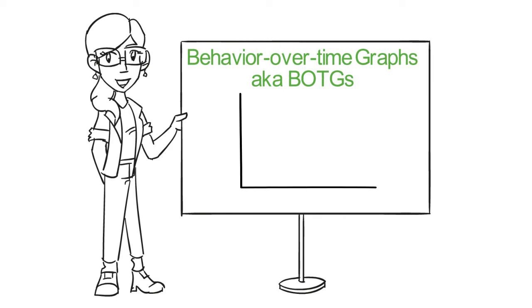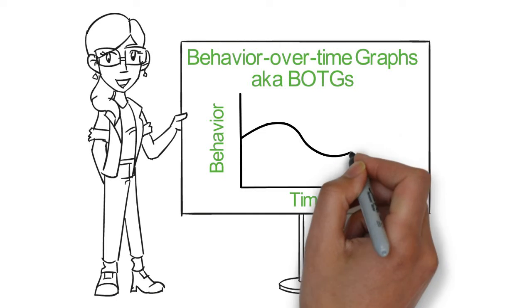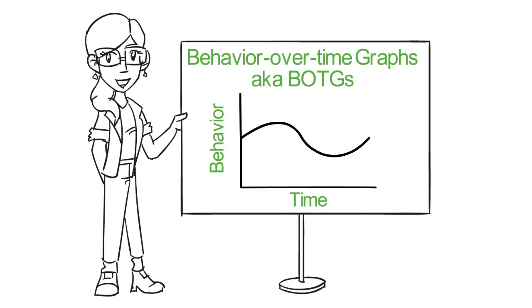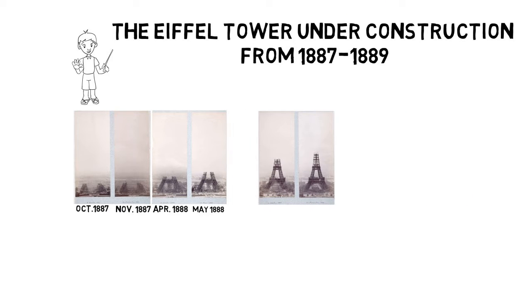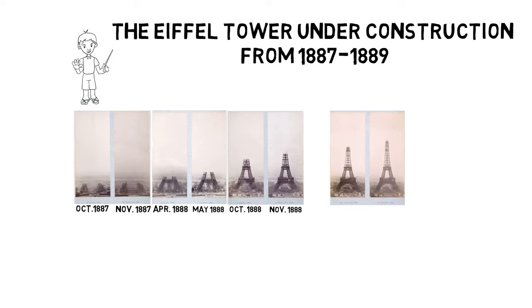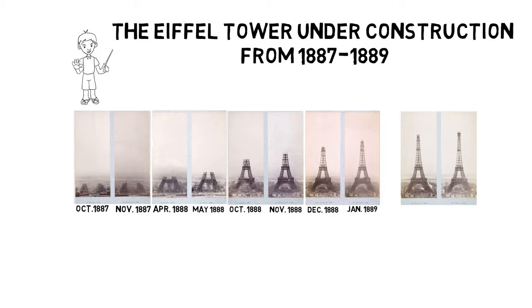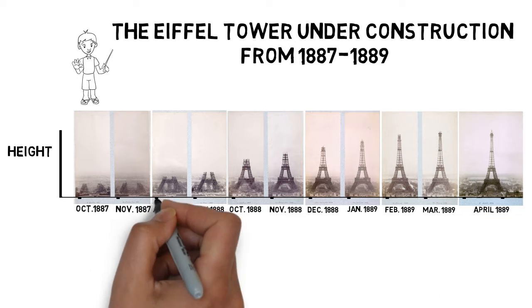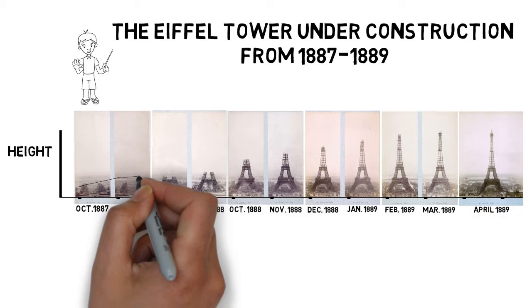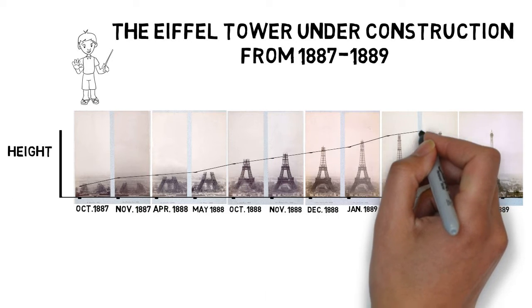A behavior over time graph is a line graph that shows how something has changed over a period of time. It creates a visual representation of what is happening in a system. Time is always on the x-axis and the behavior is always on the y-axis.